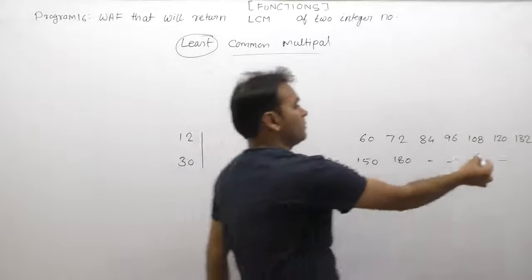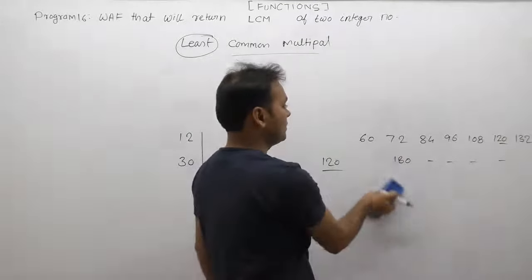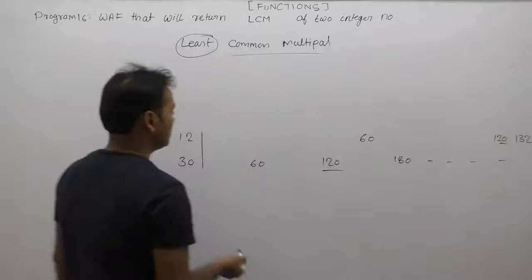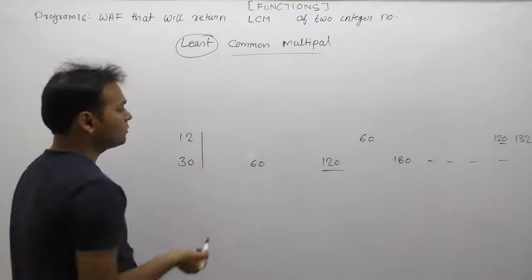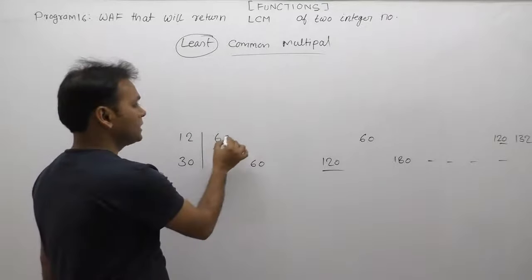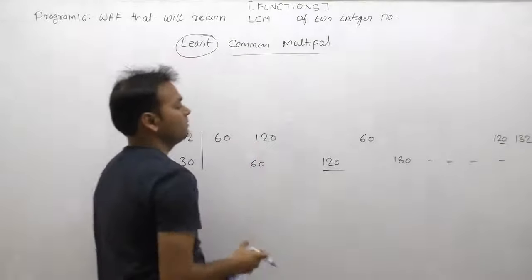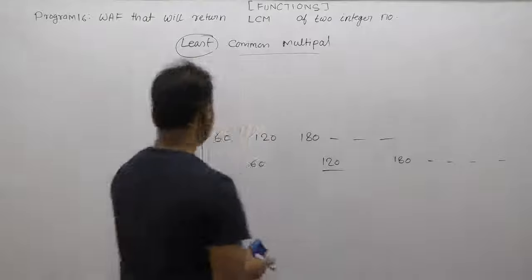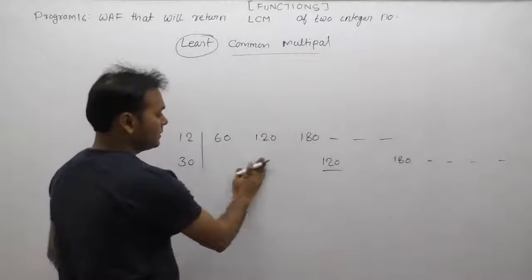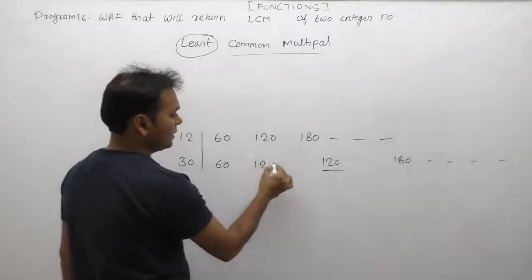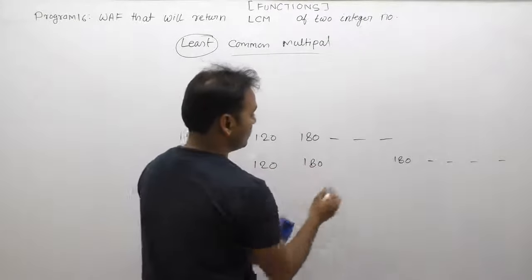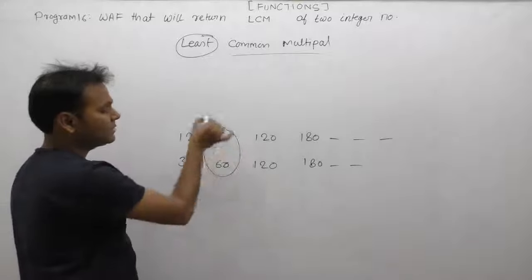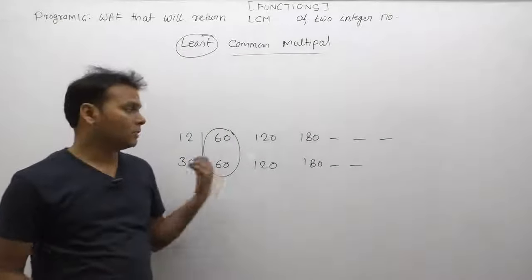The common multiples are 60, 120, 180, and so on. In this case, the least common multiple is 60. But how do we find this using a C program?